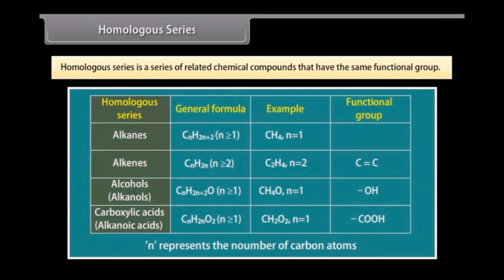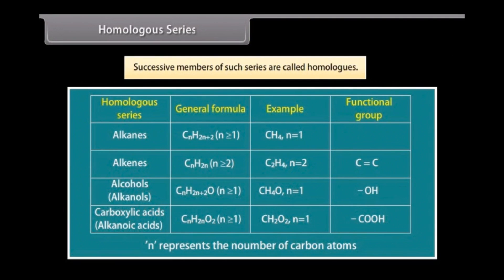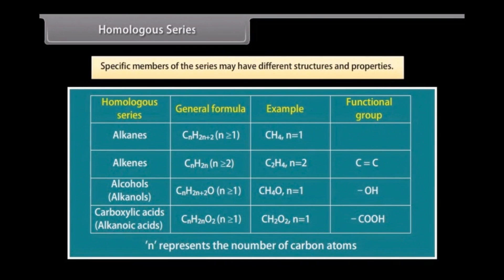Homologous series. Homologous series is a series of related chemical compounds that have the same functional group. These differ in formula by a fixed group of atoms. The successive members of such series are called homologous. Even though the general formula remains constant in a homologous series, specific members of the series may have different structures and properties. However, the reactivity usually remains the same.